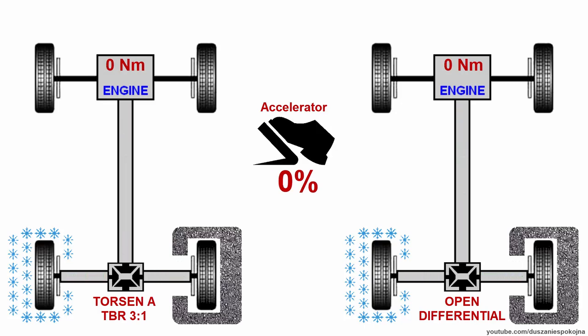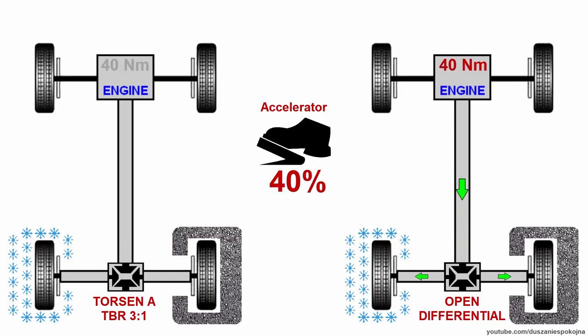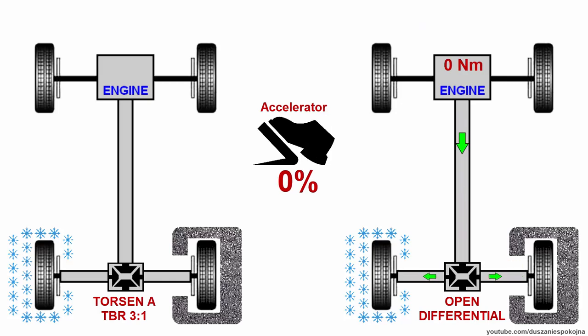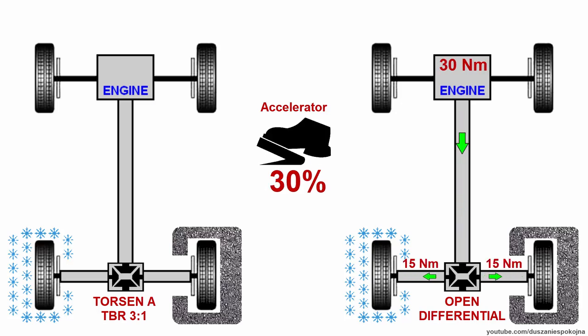Now you are pressing the accelerator pedal to 40%. The engine creates 40 Nm. The torque split of an open differential is always 50-50, so it tries to send 20 to the left and 20 to the right. The maximum value that the wheel on snow may apply to the ground is exceeded, so traction is lost. You can't press the accelerator pedal harder than 30% without losing traction. When traction is lost, the friction coefficient between tyre and snow goes down, so in fact the wheel is not applying 15 anymore — let's say 13, so 26 in total.